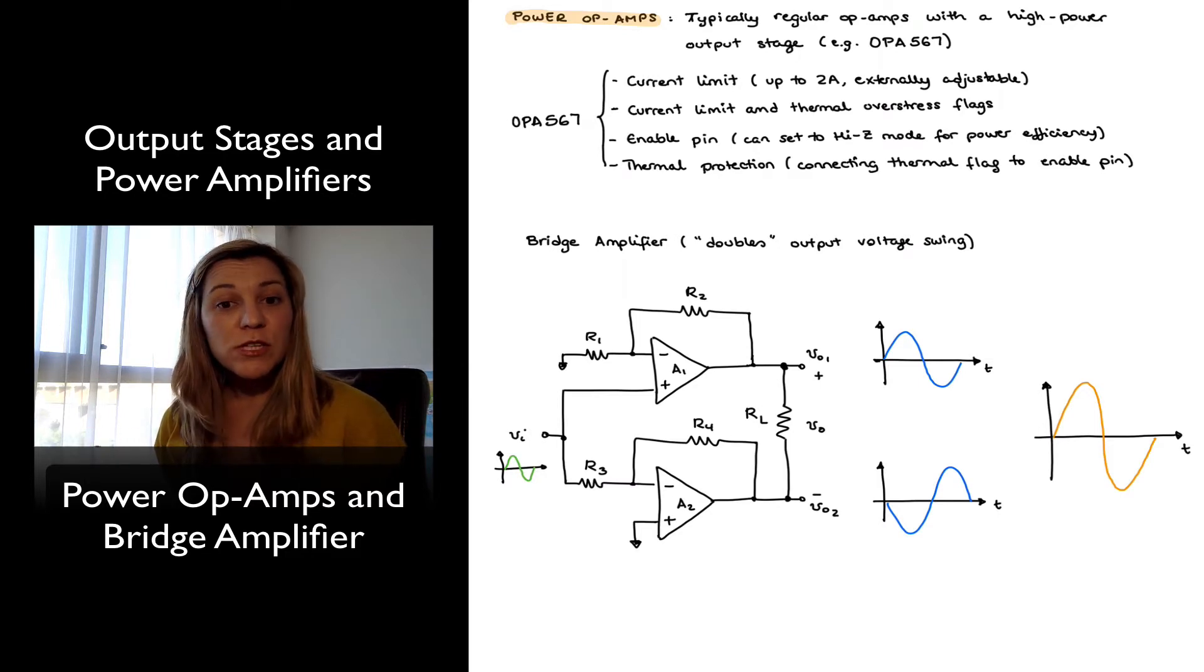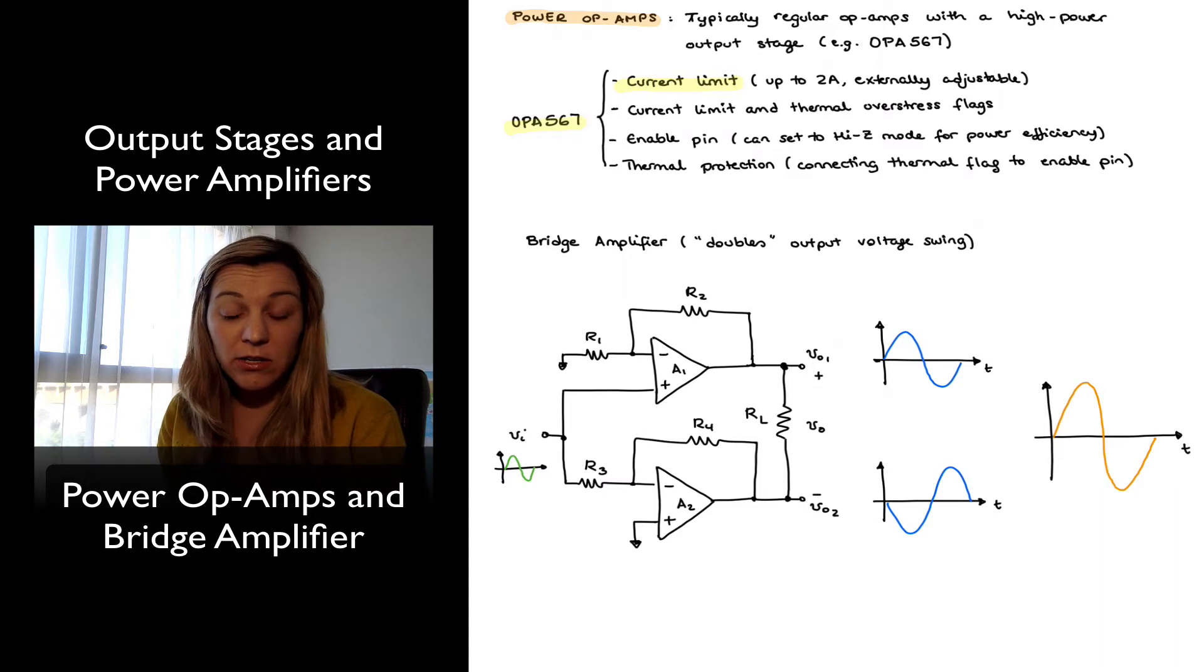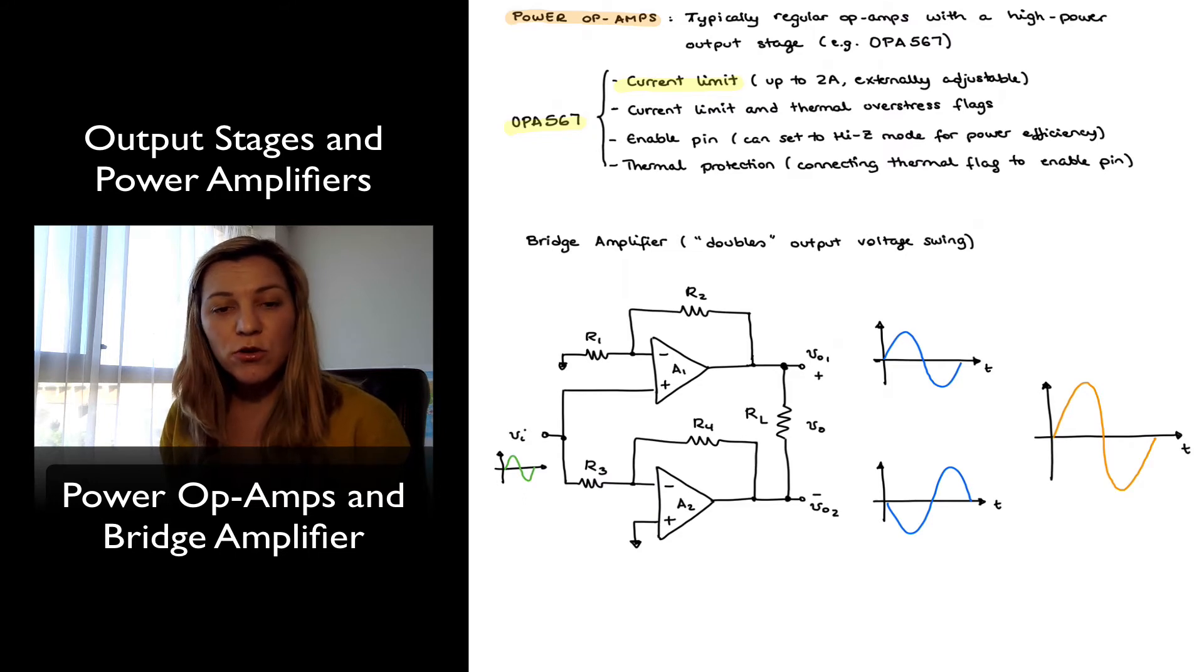We will also see some additional functionality that is not always present in a regular op-amp. For example, I've noted there a couple of interesting characteristics. The current limit is very high, it can go up to 2 amps, and it is externally adjustable. The datasheet explains how to set up a circuit to adjust it.